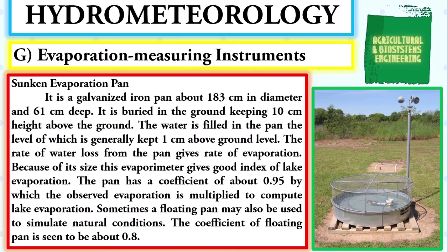Next, the sunken evaporation pan — a galvanized iron pan about 183 centimeters in diameter and 61 centimeters deep. It is buried in the ground keeping 10 centimeters above ground, with water filled to one centimeter above ground level. The rate of water loss gives the rate of evaporation. Because of its size, this evaporometer gives a good index of lake evaporation. The pan has a coefficient of about 0.95 by which observed evaporation is multiplied to compute lake evaporation. A floating pan may also be used, with a coefficient of about 0.8.